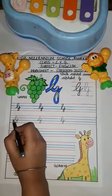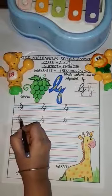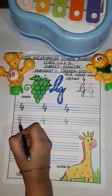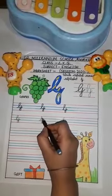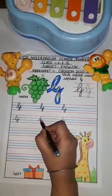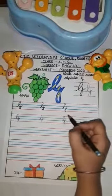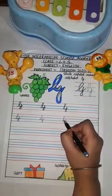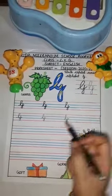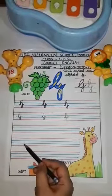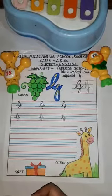Now you will write it here. G for grapes. G for gift. You will write it here in the same way in your notebook. Thank you.